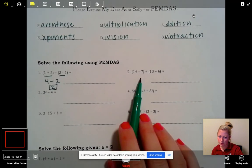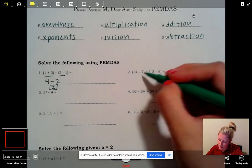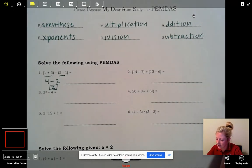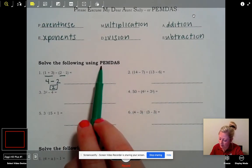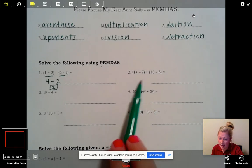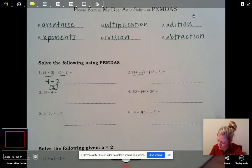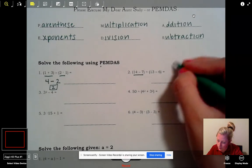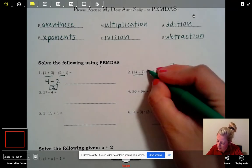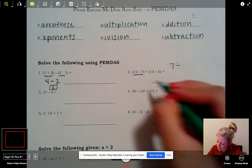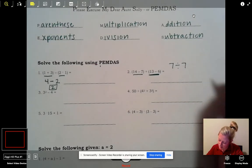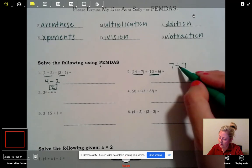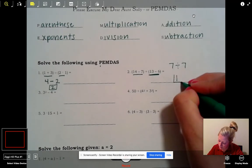It says solve the following using PEMDAS. So what we do is we just look at our acronym and follow it. Number one: (1+3)-(2×1). My first step is to look and see, do I have any parentheses? Sure, we have two sets. So I'm first going to do this guy. What is 1 plus 3? Well, we know 1 plus 3 is 4. Then copy down the rest. I get to another set of parentheses, so 2 times 1 is 2. Now we're left with 4 minus 2, which is just simply 2. And that is it.